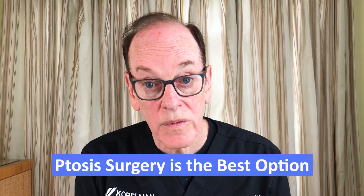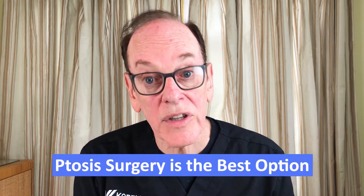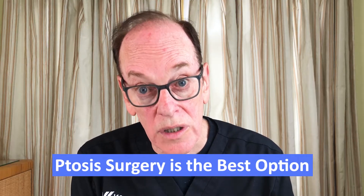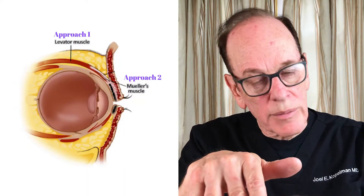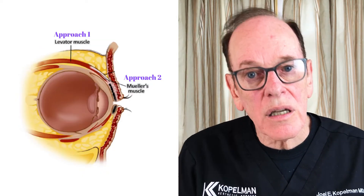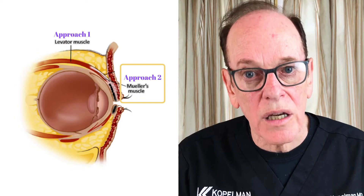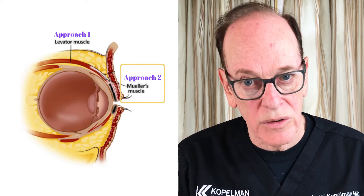However, if you want a longer, sustained improvement, it's going to require surgery. There are basically two approaches to lifting the eyelid up internally by tightening muscles. There's an anterior set of muscles called the levator muscle, and a posterior set called Mueller's muscle. I prefer tightening Mueller's muscle if I can on certain patients, and I determine that at the time of the consultation.